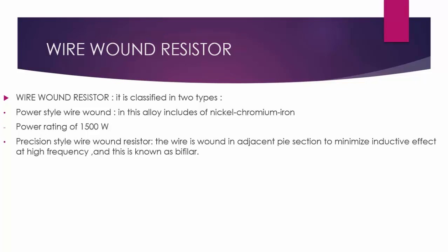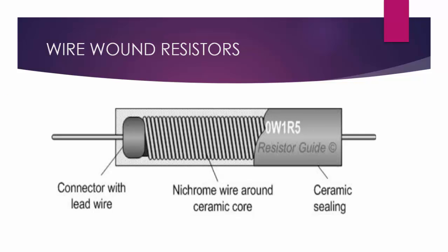The second type is the precision style wire wound resistor. The wire is wound in adjacent bifilar sections to minimize the inductance effect at high frequency — a process known as bifilar winding. As shown, nichrome wire is wound around a ceramic core to offer resistance.